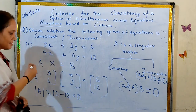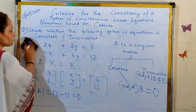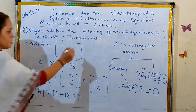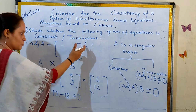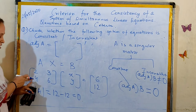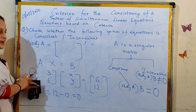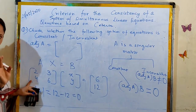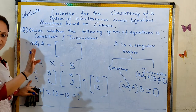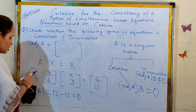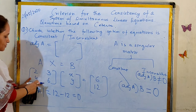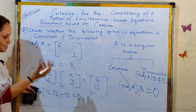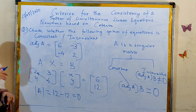Let's find the adjoint of A. The adjoint of a matrix is the transpose of the cofactor matrix. For a 2×2 matrix, we can calculate it directly without taking a transpose — we interchange the diagonal elements and reverse the sign of the off-diagonal elements. This gives us the adjoint of matrix A.